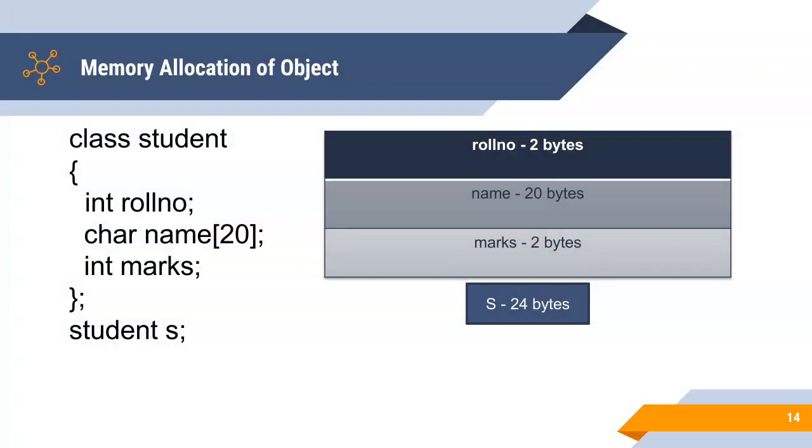Roll number occupies two bytes. Name occupies twenty bytes. And marks occupy two bytes. The total bytes are twenty-four. That will be allocated by the object S.